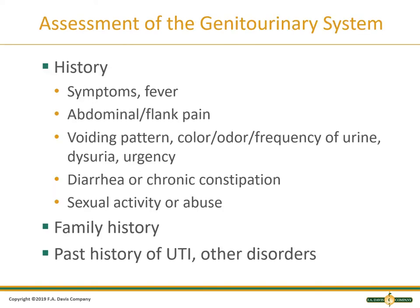Getting a good history — looking at symptoms: fever, any abdominal pain, back pain, flank pain, how they are voiding, difficulty voiding, steady stream, urgency, frequency, pressure. Any GI complications or issues — diarrhea, constipation — and sexual activity or abuse.